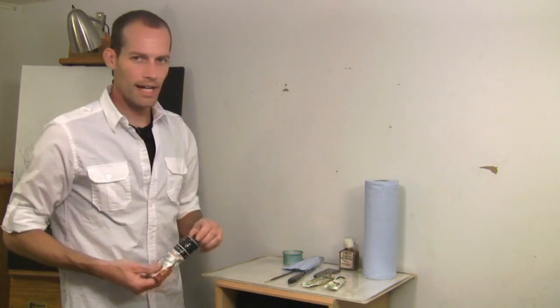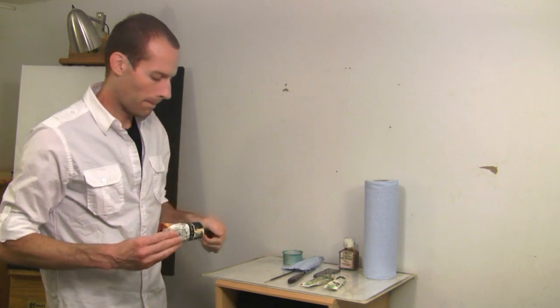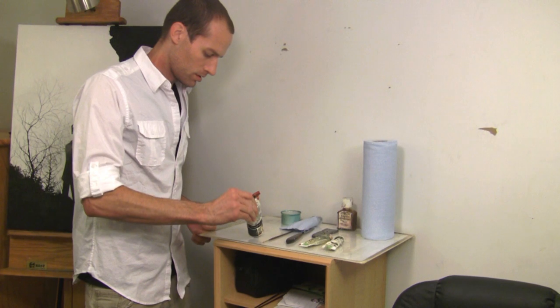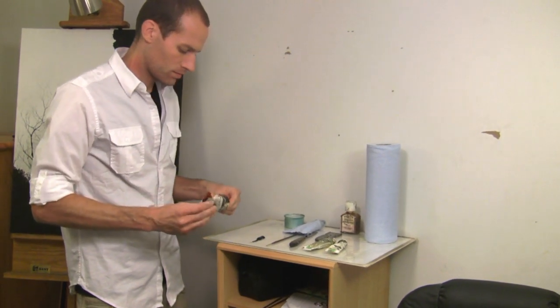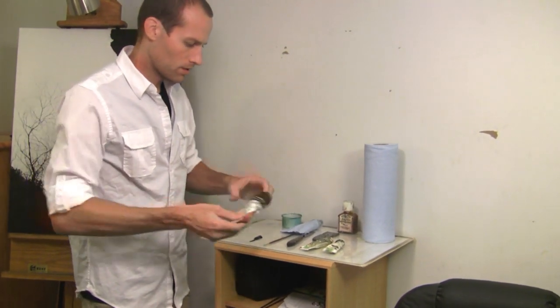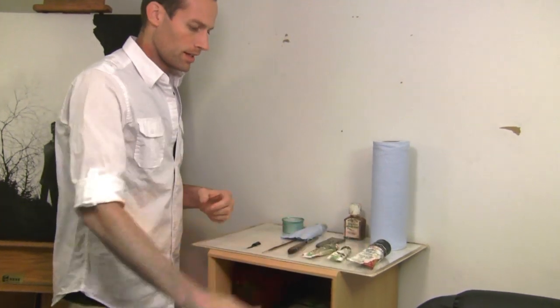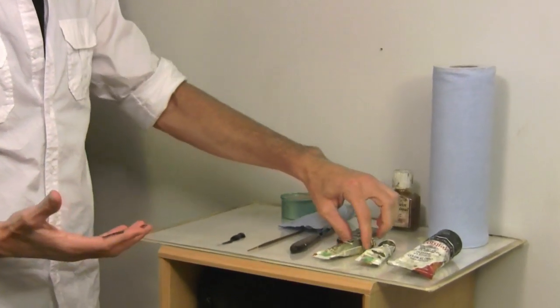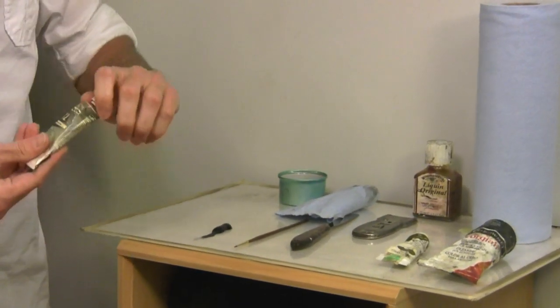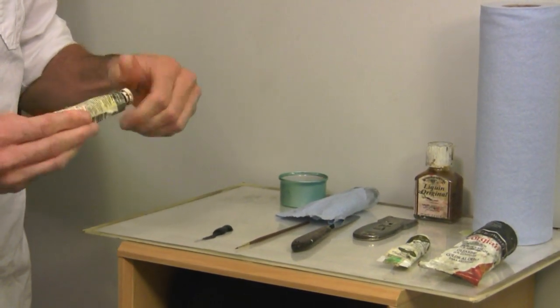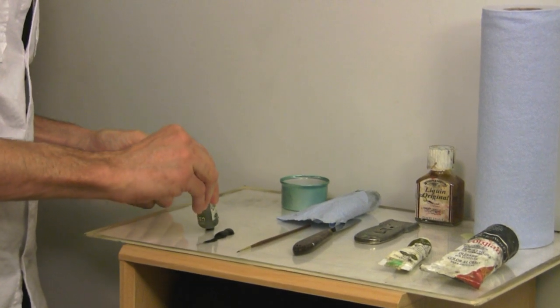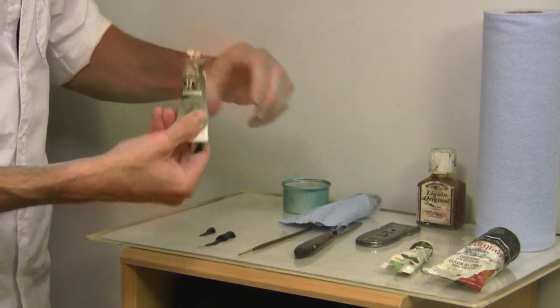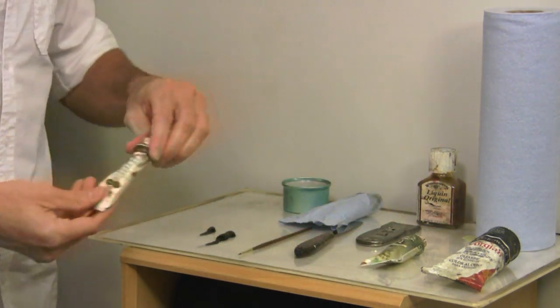So first you'll lay out the paint. The color I'm mixing up today is basically a black, but I like to add gray and green to my black to give it a little more variety. Using Payne's gray and then an olive green.